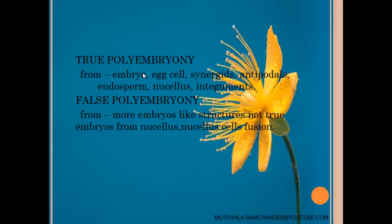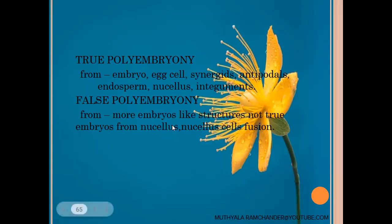In true polyembryony, nucellus tissue cells develop into true embryos that can develop into plantlets. In false polyembryony, the same nucellus cells develop into embryo-like structures — not true embryos — and those structures cannot develop into plantlets. This is the main difference between true polyembryony and false polyembryony.